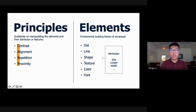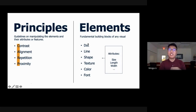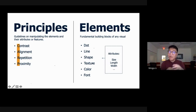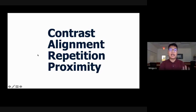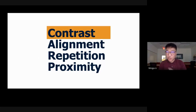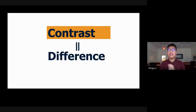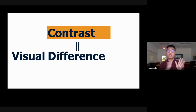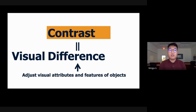Elements are the fundamental building blocks, but our focus today will mainly be on the principles. We'll also embed elements — particularly color and font — within the discussion of principles. What is contrast? Simply, contrast is difference. Because we're talking about visuals today, the difference is visual difference. To create contrast in a design, we adjust the visual attributes and features of the visual objects. Let's use some examples to understand how we create visual difference.